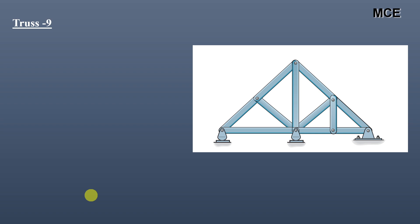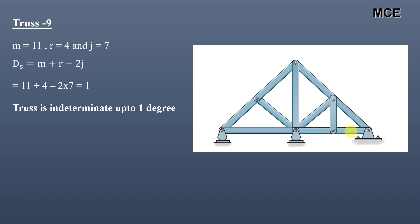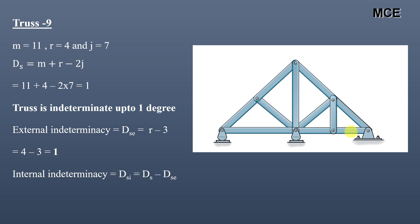For truss nine, this truss has 11 members, 4 reactions (one at each roller and two at the hinge), and 7 joints. ds = 1, so this truss is indeterminate to one degree. External indeterminacy equals 4 − 3 = 1, meaning the truss is externally indeterminate to one degree. Internal indeterminacy equals 1 − 1 = 0.